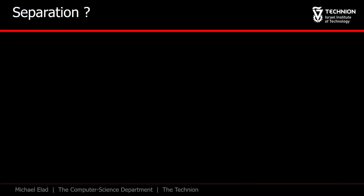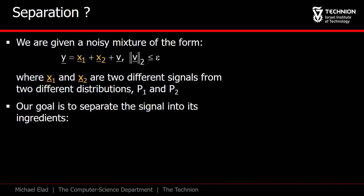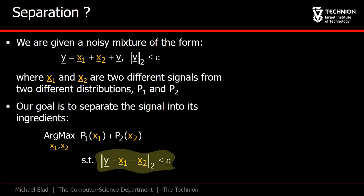What about image separation? Suppose that we are given a noisy image y, that is built of two different images x1 and x2, where each emerges from a different distribution. How could we recover x1 and x2 from y? The answer is simple. Find such two images that maximize their probabilities, while giving a sum that is up to epsilon away from y.